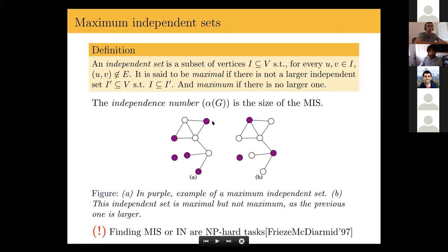The size of the maximum independent sets of the graph is called the independence number and will be represented by alpha(G). It is a well-known result that constructing maximum independent sets or computing independence numbers in the context of general graphs is in general an NP-hard task.